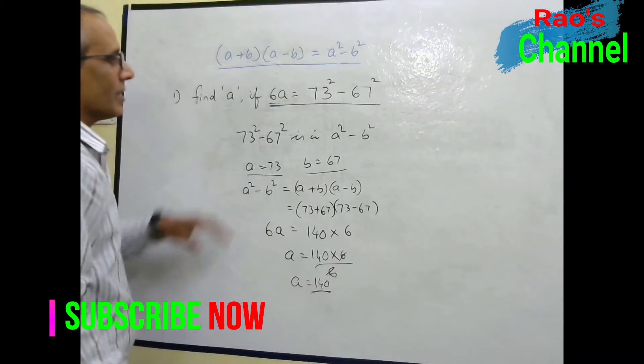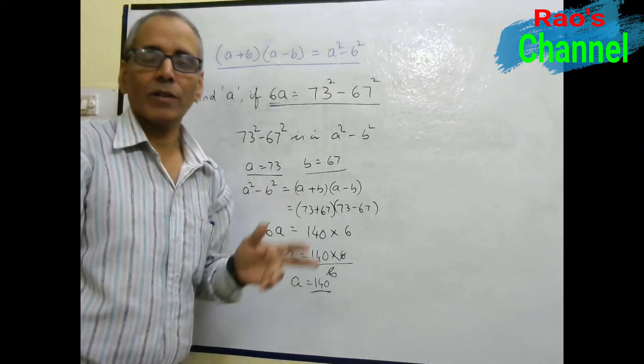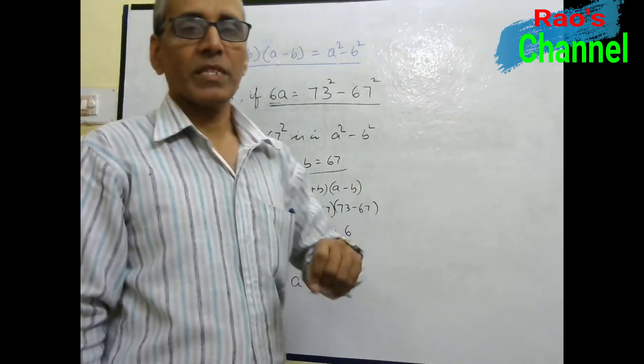See here we use the same identity but in reverse: A square minus B square is equal to A plus B of A minus B.